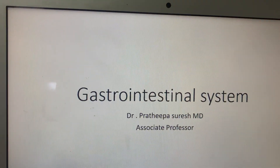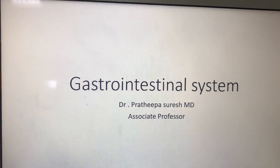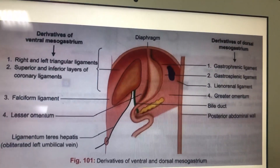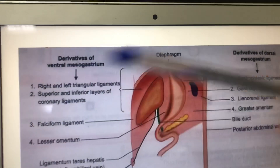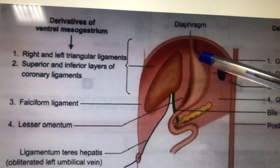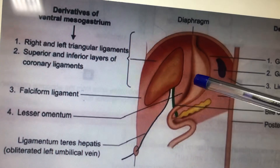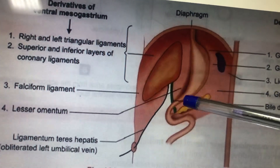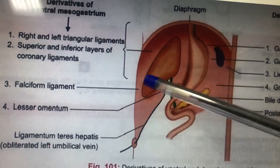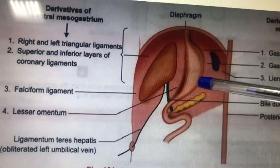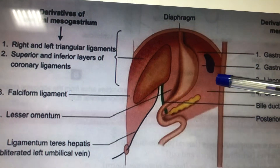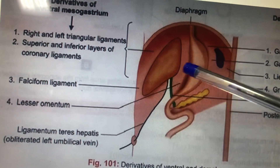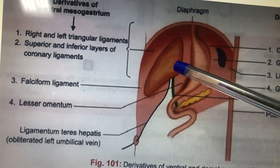In this video we're going to see the gastrointestinal system development. Initially you have one tube called the gut tube, present in the middle of the abdominal cavity. Anteriorly you have a fold called the ventral mesentery, and posteriorly you have a fold called the dorsal mesentery.